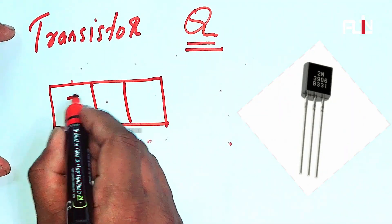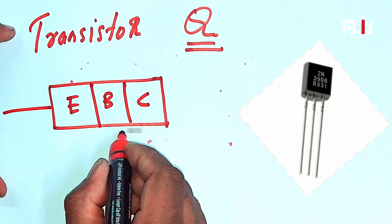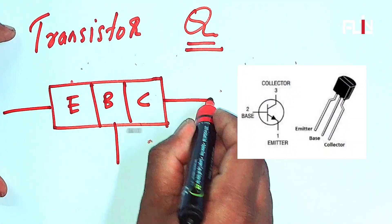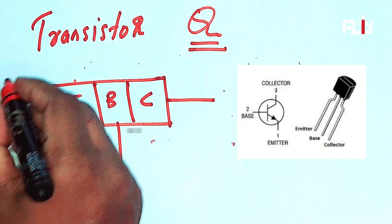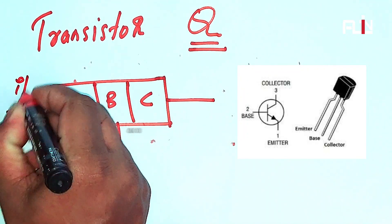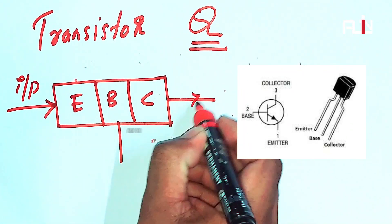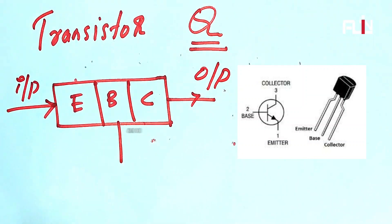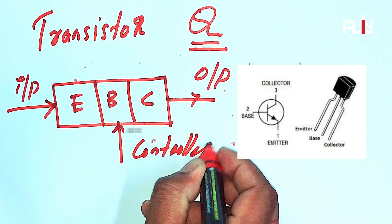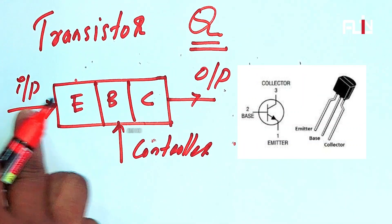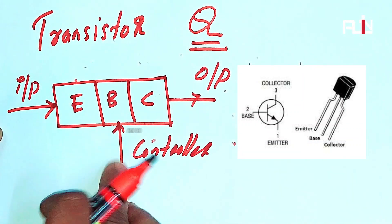The transistor has three terminals: Emitter, Base, and Collector. The transition moves from input to output. The Collector input and Emitter Collector output are used for control.